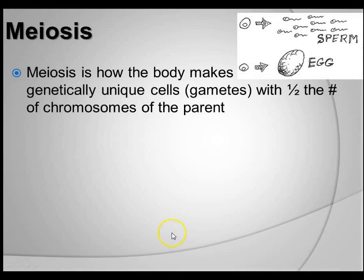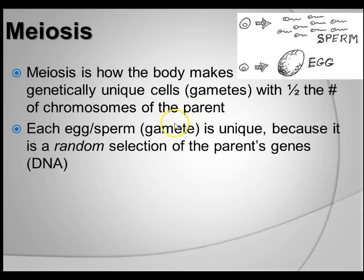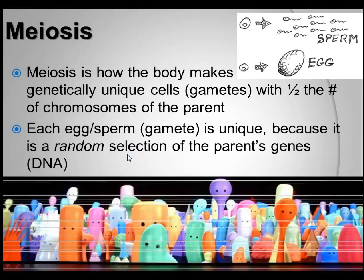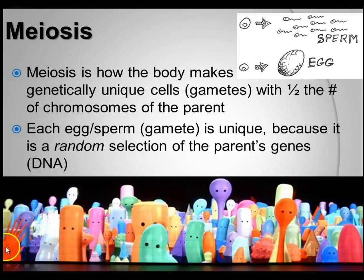Meiosis, simply put, is how the body makes genetically unique cells — those are gametes — with half the number of chromosomes of the parent. Each one is unique because it is a random selection of the parent's DNA. Every single person is unique because you're a random selection of your parent's genes. Men are making sperm — they're all unique. Women are making eggs — they're all unique.